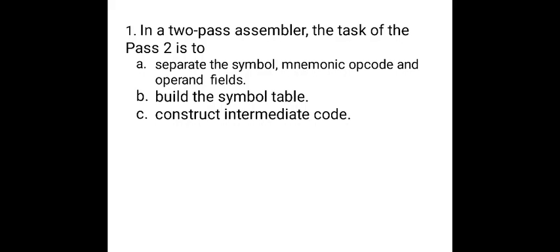The first MCQ for today is: In a two-pass assembler, the task of Pass 2 is what? Option A is separate the symbol, mnemonic opcode and the operand field. Option B, build the symbol table. Option C, construct the intermediate code. Option D, synthesize the target program. This is many times we have discussed about the task of the two-pass assembler and yes, what you are guessing is correct, the answer is D, that is synthesizing the target program.